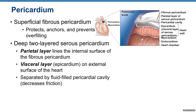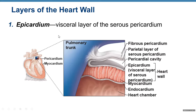The visceral pericardium has another name: epicardium. It's on the external surface of the heart. The parietal and visceral layers are separated by the fluid-filled pericardial cavity, which decreases friction. The epicardium is the same as the visceral pericardium — the visceral layer of the serous pericardium.